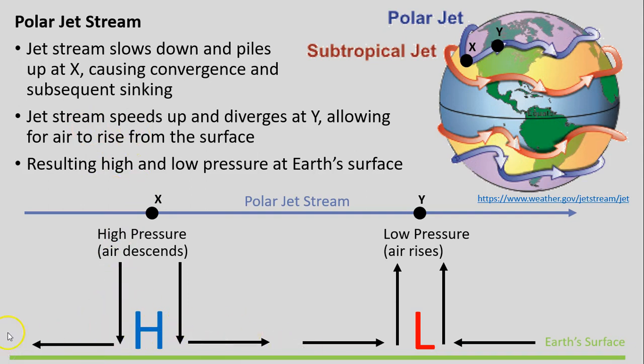In a converse manner, in these straightaway areas, our jet stream gets to pick up more speed. As it speeds up, it generally diverges—our air separates out and is not as dense. That allows air from the surface to rise, and that's where we're getting low pressure coming up to try and reach some sort of equilibrium.